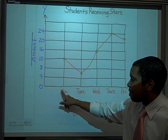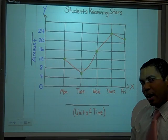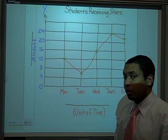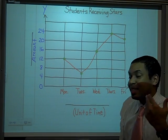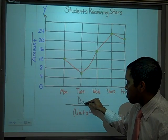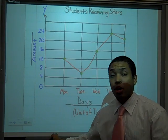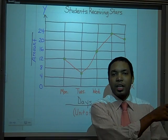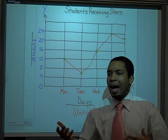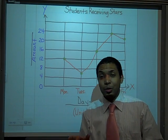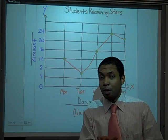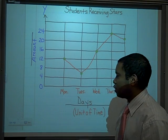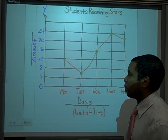On the bottom I'm giving you a measurement of time. In this case I have Monday, Tuesday, Wednesday, Thursday, Friday — so those units of time are days. I could also have months: January, February, March, April, May. I could have years: 1992, 1993, 1994, and so on. It all depends on what you're trying to show.